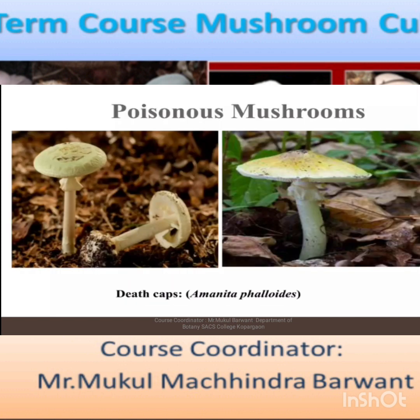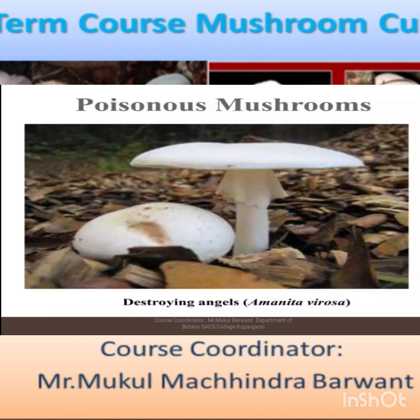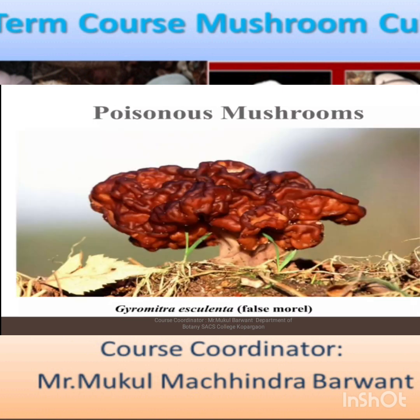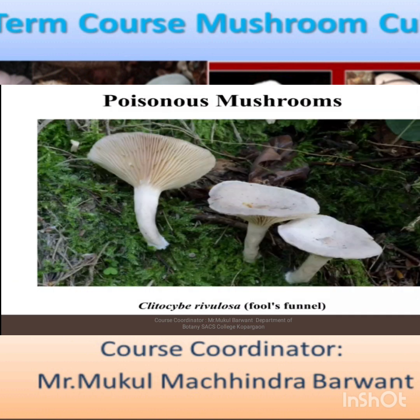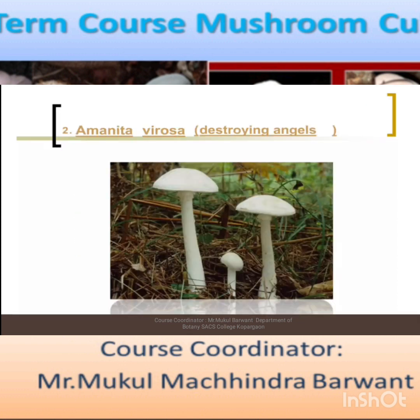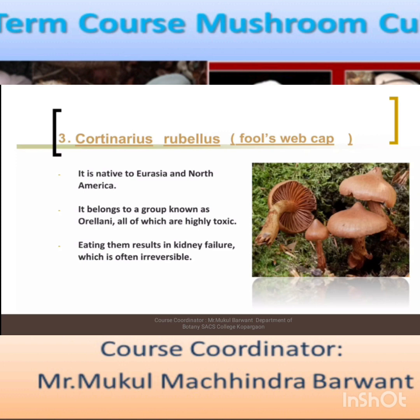Some examples of poisonous mushrooms include: Amanita, Galerina, Scleroderma, and Amanita phalloides. Amanita is one type of poisonous mushroom, and we can see its natural habitat in the images shown.